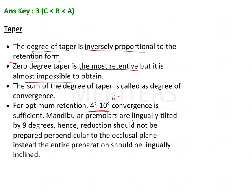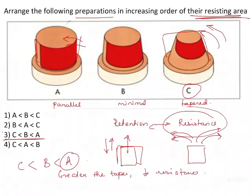Mandibular premolars are lingually tilted, so you may have to go up to 9 degrees to get that kind of a taper. Remember, more the taper, less is the resistance form. Correct answer is 3. C is lesser than B, lesser than A.